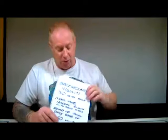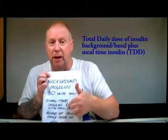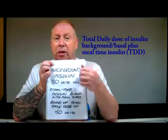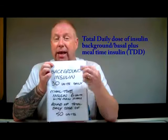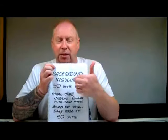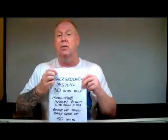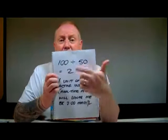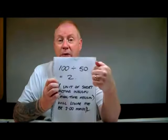So how do we do that? Well, it's really quite simple. What I do is I add up my long-acting insulin and my short-acting insulin together to get a total daily dose — TDD, as we call it in the business. And once I've got that total daily dose, I use a very simple formula called the 100 rule, which is: 100 divided by your total daily dose.